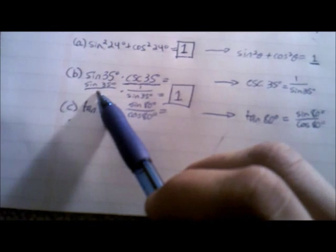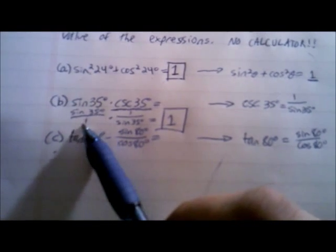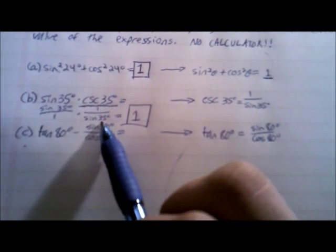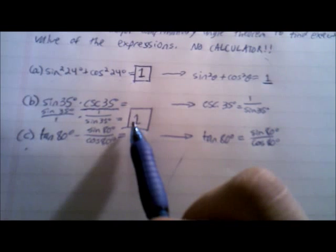So we're going to change that. Writing it as sine of 35 over 1 helps see it better. You multiply that by 1 over sine of 35, and that equals 1 — everything cancels.